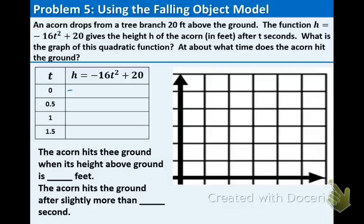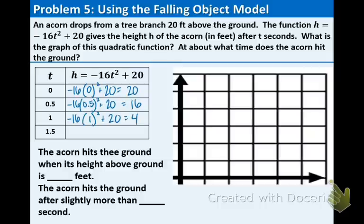Now we want to plug in these values for the function. The first one, we just get 20. Next we get 16. We get 4, and then we get negative 16. T is for time in seconds, and h is the height of the acorn in feet. You notice that we get into the negatives. That means that the acorn hit the ground between those two times.